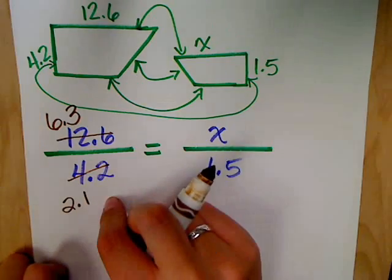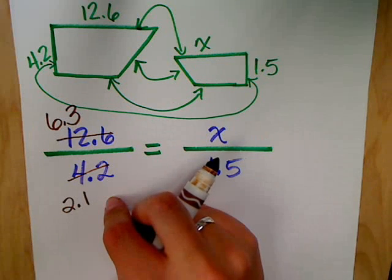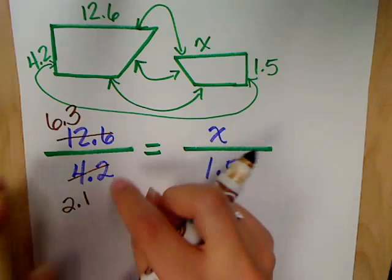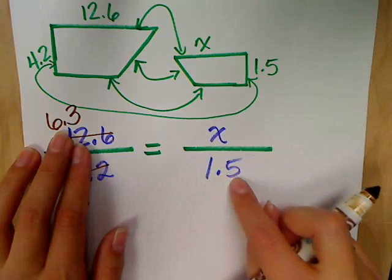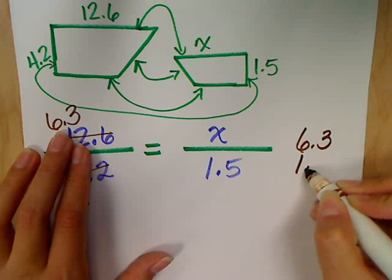Now, if you can't do this in your head, don't worry about it. Just don't simplify first. Just cross-multiply. Okay? So, we've got six and three tenths multiplied by 1.5, or one and a half. Pull to the side. Work it out.